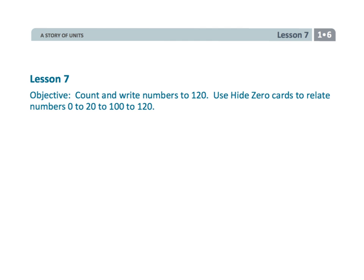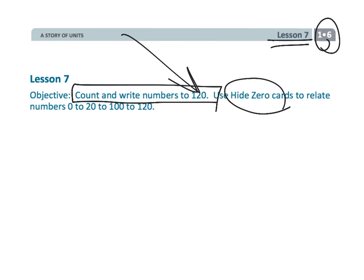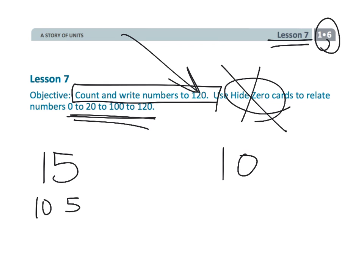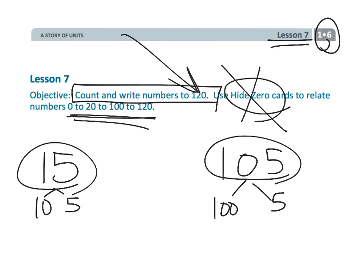And that wraps up first grade module 6, lesson 7. We are extending our counting up to 120. We may or may not be using hide zero cards, but we are relating our numbers. Numbers like, for example, 15 can be thought of as 10-5. And then 105 is going to be thought of as 105. So just in the same way that we used to describe 15 as 10-5, with 105, we're going to describe it as 105.